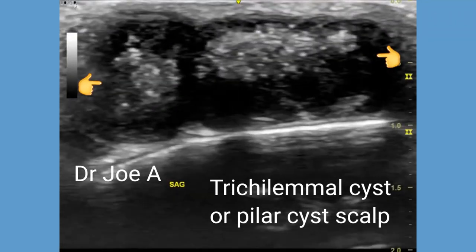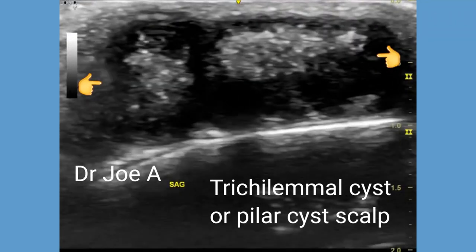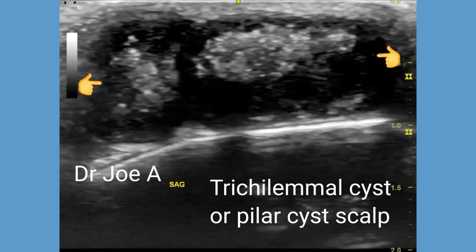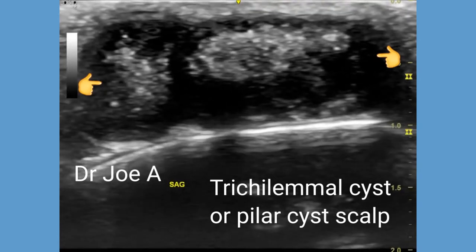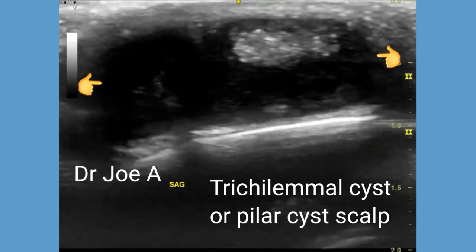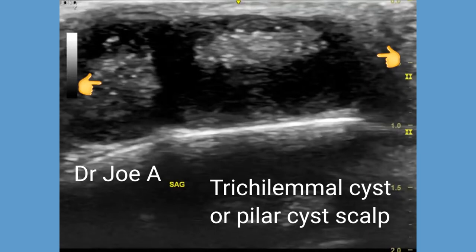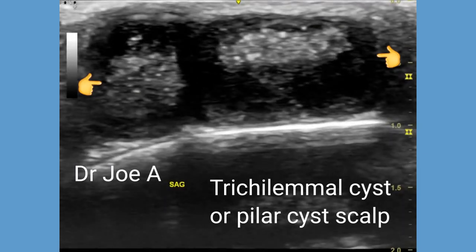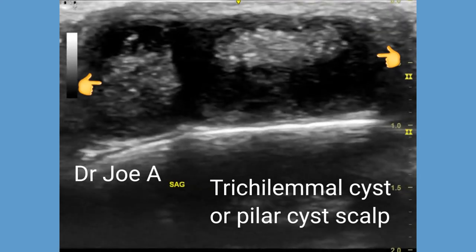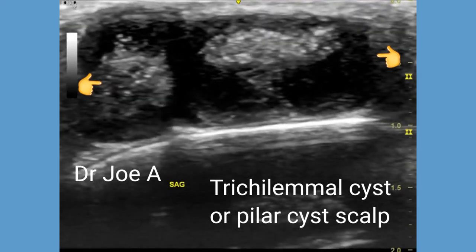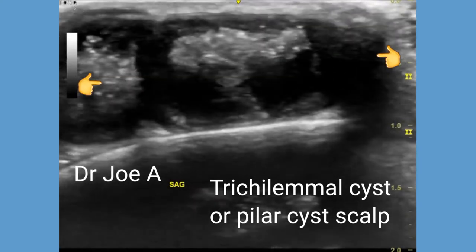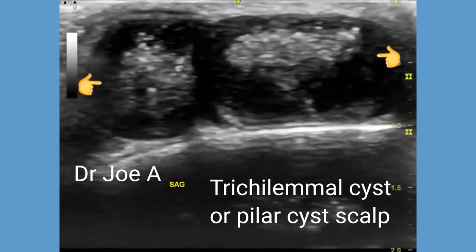A trichilemmal cyst, or pilar cyst of the scalp, is a keratin-filled cyst that originates from the outer sheath of the hair follicles of the scalp. This is seen most commonly in the scalp in middle-aged women. The cyst also commonly contains a central echogenic area formed by cholesterol crystals or calcifications.